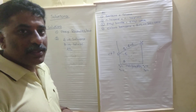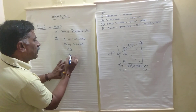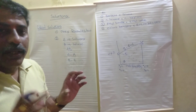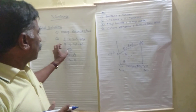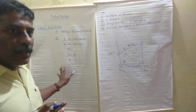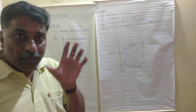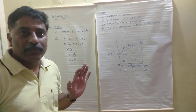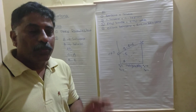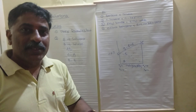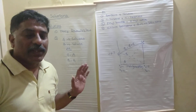Here solvent molecules are represented as AA, and solute molecules as BB. So the molecular attractive forces of AB equals the molecular attractive forces of AA and the molecular attractive forces of BB. In ideal solutions, all the molecular attractive forces — solvent-solvent, solute-solute, and solvent-solute — are equal.